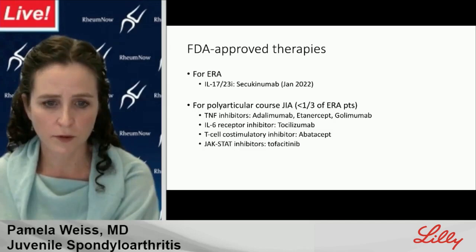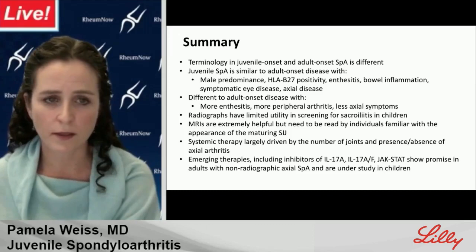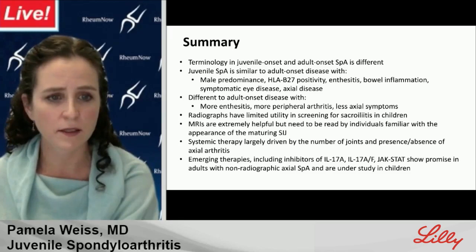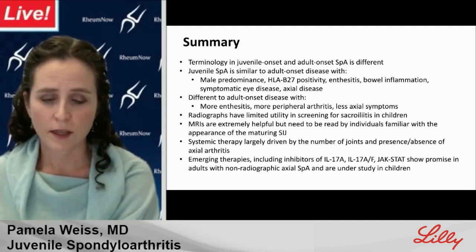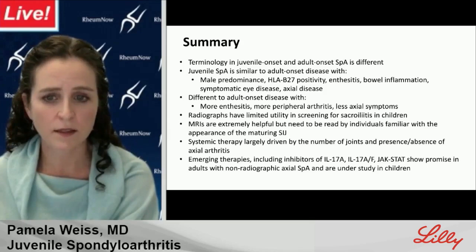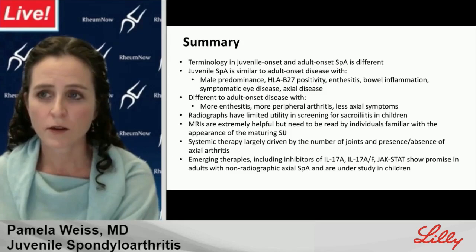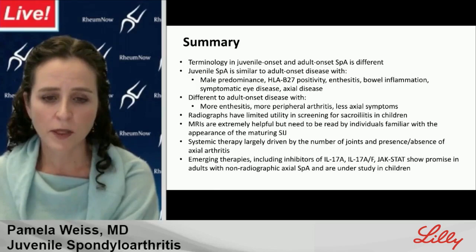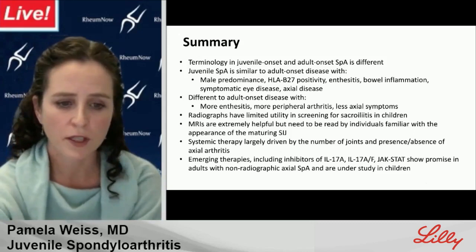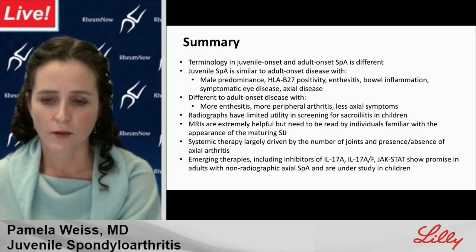In summary: terminology in juvenile onset and adult onset SPA differs. Juvenile SPA is similar to adult onset disease with male predominance, HLA-B27 positivity, enthesitis, bowel inflammation, symptomatic eye disease, and axial disease. It differs in having more peripheral disease including enthesitis and arthritis, with fewer axial symptoms but not necessarily less axial disease. Radiographs are not useful for screening sacroiliitis in kids. MRI is extremely helpful but must be read by individuals familiar with the maturing sacroiliac joint to avoid over-calling sacroiliitis. Systemic therapy is driven by joint count and axial involvement, and emerging therapies including IL-17A inhibitors and JAK/STAT inhibitors show great promise but remain understudied in children.